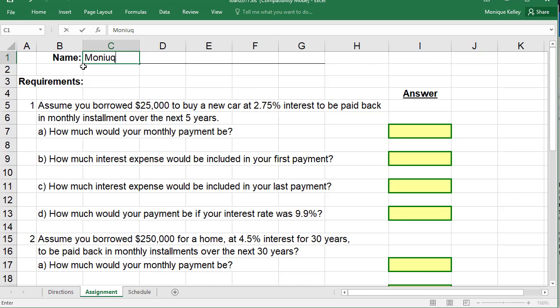Make sure you put in your name. I'm typing in my name, so you type in your name in the name cell. And then read the very first item: assume you borrow $25,000 to buy a new car at 2.75% interest to be paid back in monthly installments over the next five years. And then you have four different questions that you're going to have to answer using the spreadsheet.